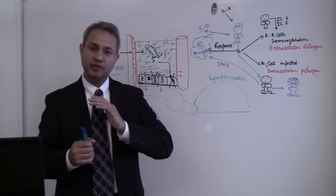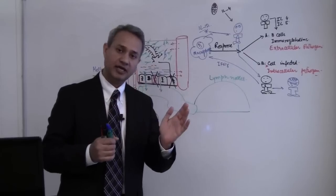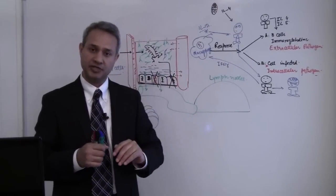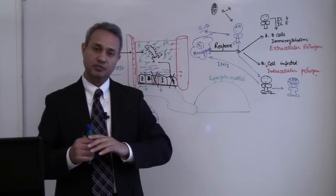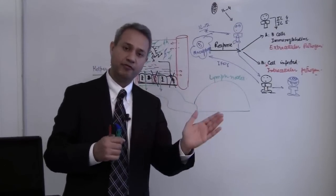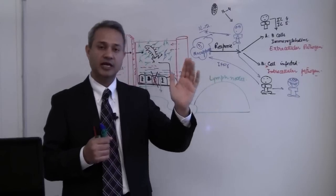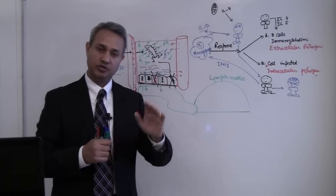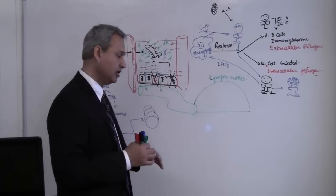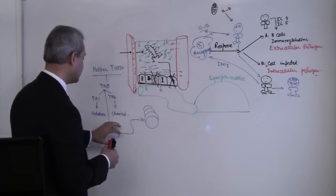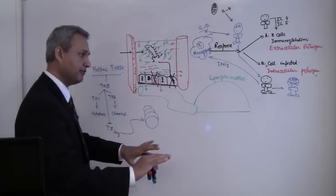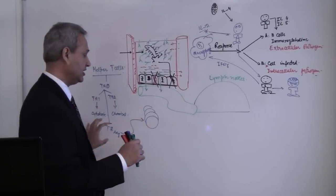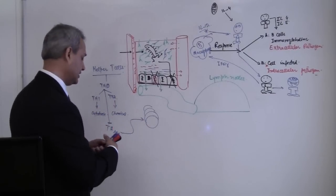Always remember: we should be able to mount a reaction and we should be able to unmount a reaction — amplify it and also de-amplify it. T regulatory cells are very important to de-amplify and reduce the immune reaction.